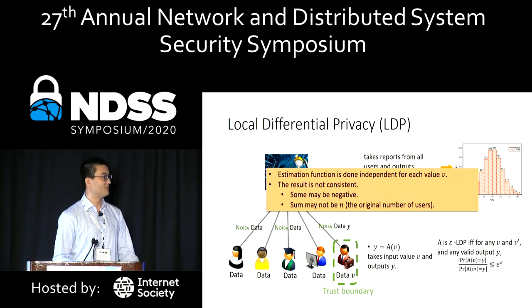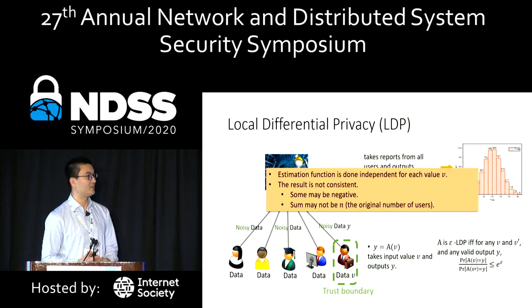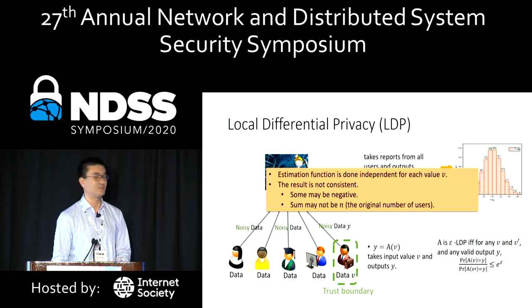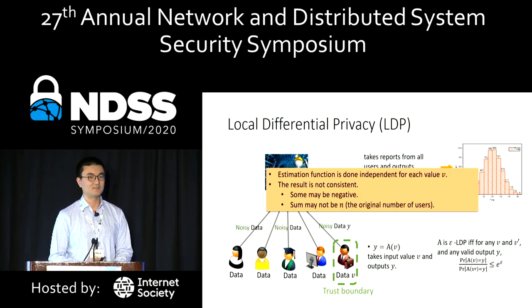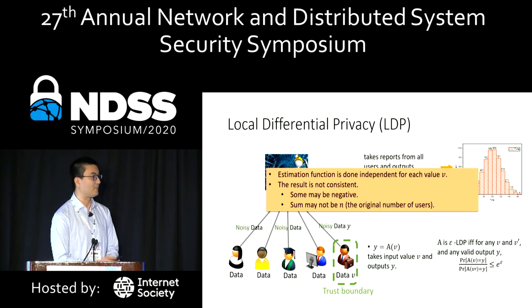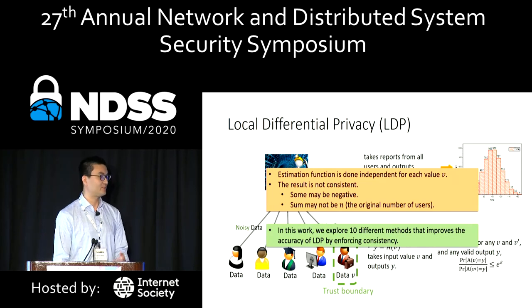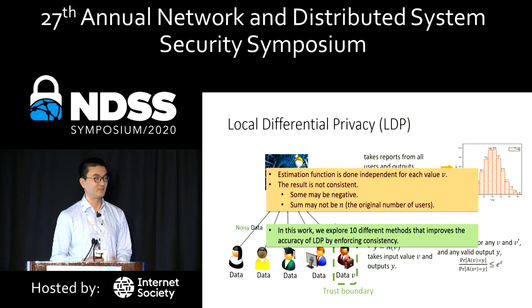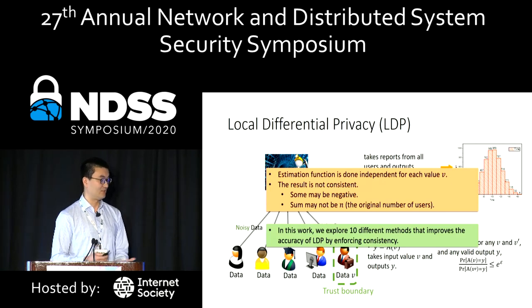We observe that this estimation function is done independently and separately for each value. As a result, the estimation may not be consistent. In particular, some of the estimations might be negative, and moreover, the sum of the estimations may not equal the expected sum. In this paper, we explore ten different methods, summarize their work, and systematically analyze and evaluate their effect on post-processing the LDP estimation.